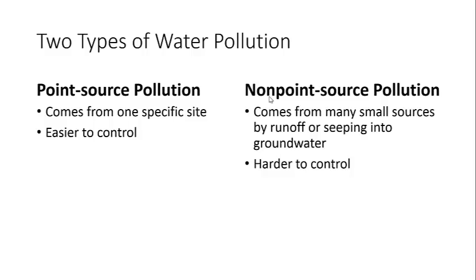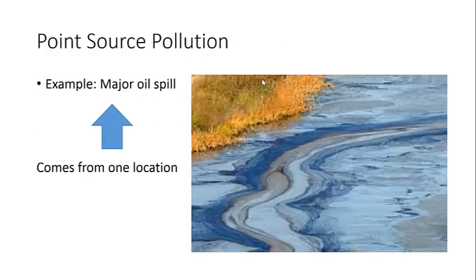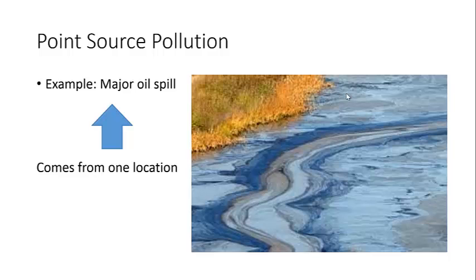So here's what I mean. This is point source pollution — there's a major oil spill. A few years ago, there was a major oil spill in the Atlantic Ocean by Exxon, which is an oil company, and they had a spill that caused millions of gallons of oil to be spilled into the ocean. You can see that this is coming from one location, so that is called point source pollution.